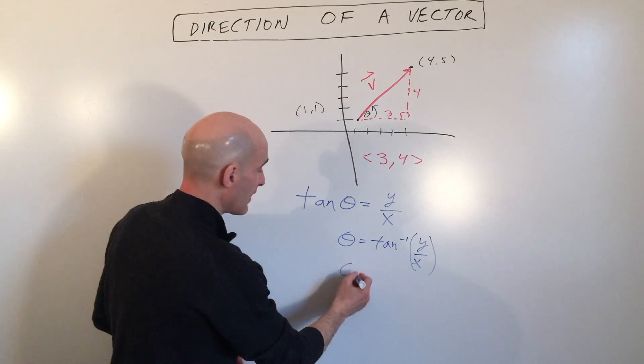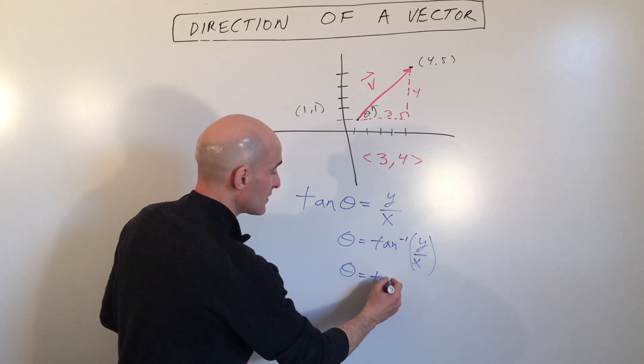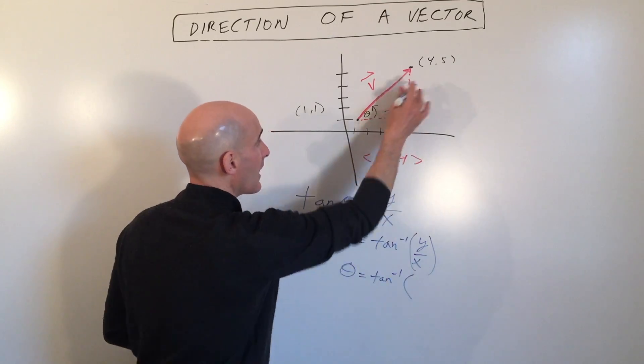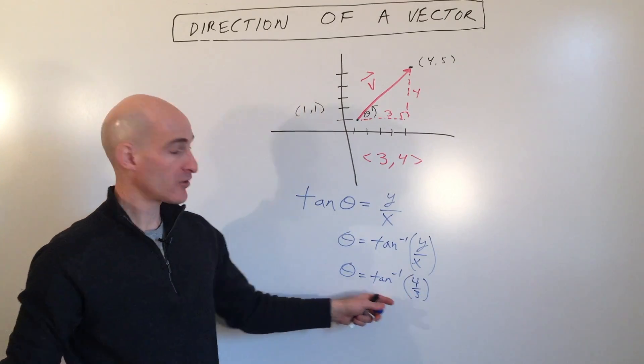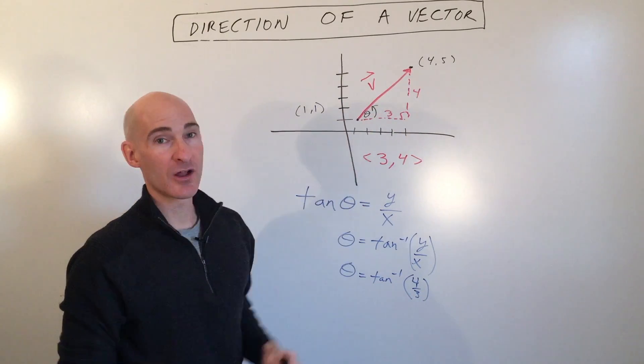So in this case, you would have theta equals tan inverse of opposite over adjacent, 4 over 3, and put that in your calculator, and that's going to be your angle of your vector.